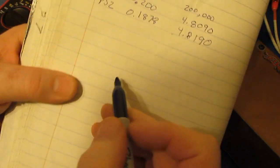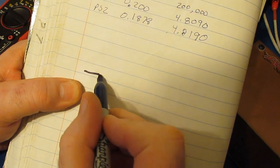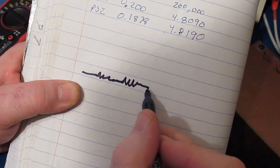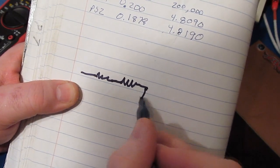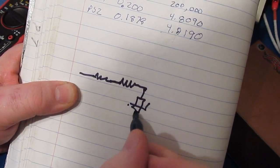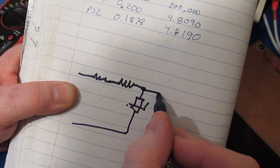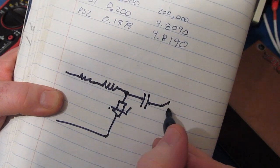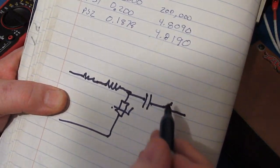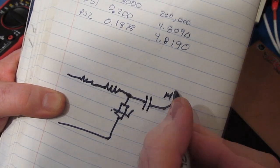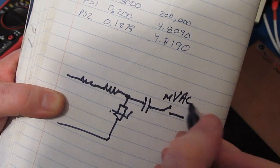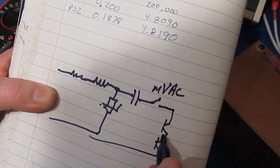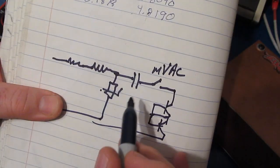So I believe what ends up happening with this particular meter: you got the input, you probably have your series resistor and then the PTC. Of course you've got the MOV out here, we'll just draw it as one MOV going back to common. And then somewhere in here there's a capacitor. And this is going to go to one of the switch contacts. And this is going to be the millivolt AC switch.